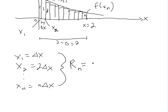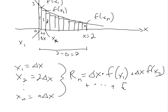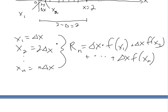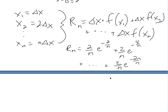Rn is just going to equal the summation of all these rectangles: delta x times f(x1), plus delta x times f(x2), etc., all the way to the last one — delta x times f(xn). And then we plug in the values we know: delta x equals 2 over n. We get 2 over n times e to the negative 2 over n, then the next term is e to the negative 4 over n, all the way up to n, which is 2 times n over n.